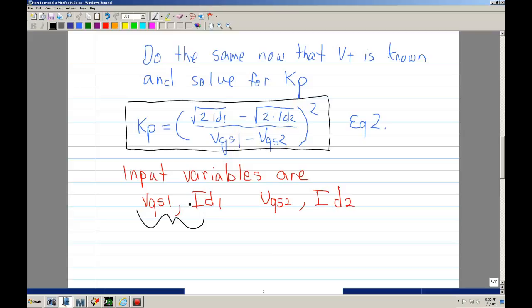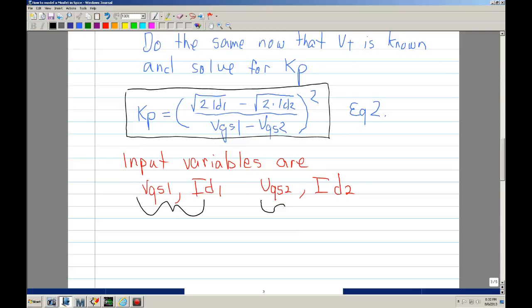Basically, I did the same thing. So now that once you know what VT is, then you can plug VT into the two equations, or the one equation, and you can solve for KP. So you have these two equations. And with those equations, then all you need to do is get these variables, which is VGS1, IDS1, VGS2, IDS2. So these would be your input parameter.